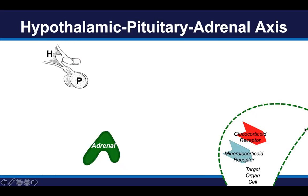Here's the entire hypothalamus, pituitary, and adrenal axis. The hypothalamus and pituitary are in the brain. The adrenal glands sit on top of the kidneys in the abdomen, and the receptors for cortisol and aldosterone — the glucocorticoid receptor and the mineralocorticoid receptor — are expressed in cells throughout the body. Before we talk about the hypothalamic pituitary adrenal axis, let's talk about the receptors and what happens when the hormones of the adrenal cortex act on them.